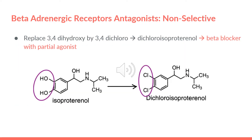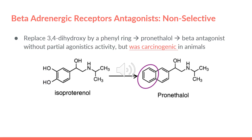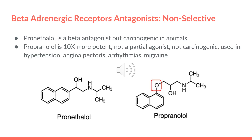So we replaced the 3,4-dihydroxy by a 3,4-dichloro and got dichloroisoproterenol, which is a beta blocker, but it turns out that it has a partial agonistic effect. Then they replaced the 3,4-dihydroxy of isoproterenol by a naphthyl ring, giving us pronethalol. However, pronethalol is a beta antagonist without partial agonistic activity, which is good, but it has a carcinogenic effect on animals. Finally, they found propranolol, which is a beta blocker that is 10 times more potent, not a partial agonist, and not carcinogenic. It is used in hypertension, angina pectoris, arrhythmias, and migraine.